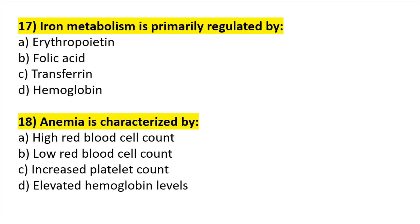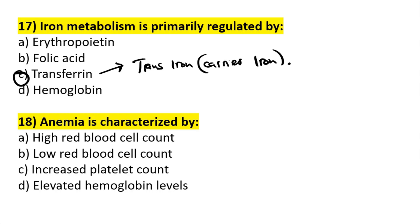Iron metabolism is primarily regulated by transferrin, which carries and transfers iron. Folic acid and hemoglobin also play a role, but it is mostly transferrin. Anemia is characterized by a low red blood cell count, while a high red blood cell count is what we call polycythemia.